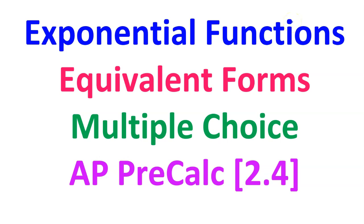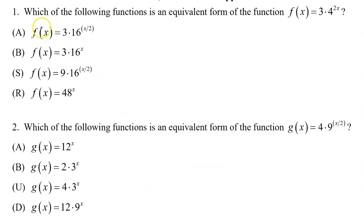In this video, let's try some multiple choice questions about writing exponential functions using equivalent forms. This is AP Precalculus topic 2.4. Number one: which of the following functions is an equivalent form of the function f(x) equals 3 times 4 to the 2x power?